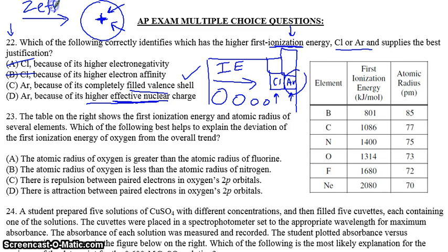So effective nuclear charge increases going toward the right. And this would then be the best answer. What you're looking for is, on the AP exam, you're always looking to use this term, effective nuclear charge.